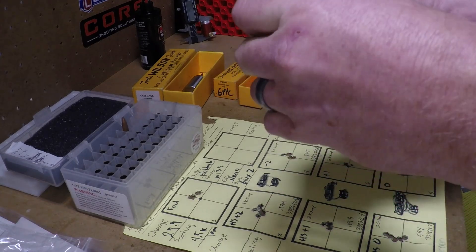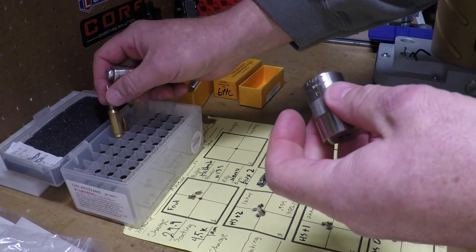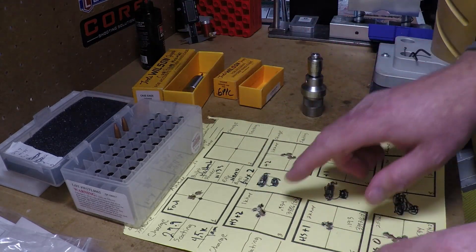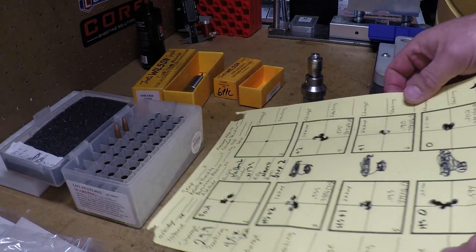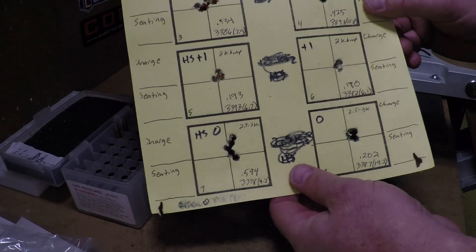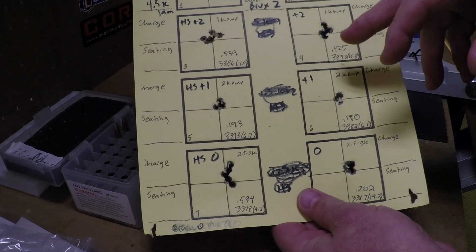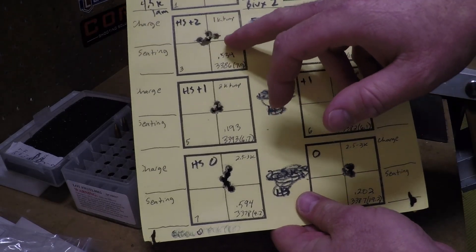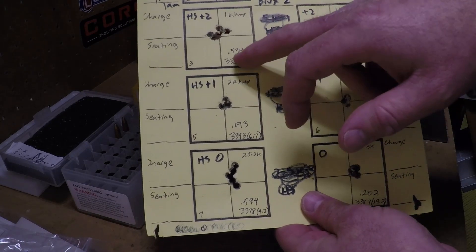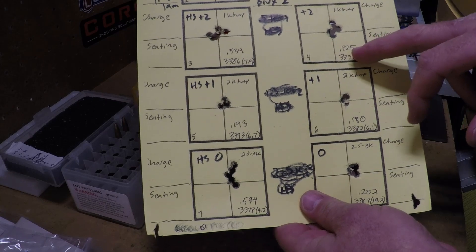So for this test, what we did is we bumped the shoulder about a thousandths, and then we bumped the shoulder two thousandths, and then we bumped the shoulder three thousandths. As you can see here, bumping the shoulder barely just a thousandths, but a half a thousandths to a thousandths, the groups were pretty big, 0.534 and 0.425.